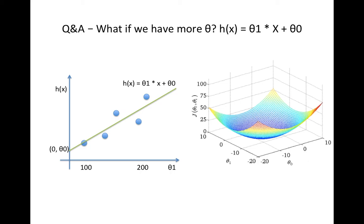Here is a bonus: what if we have more variables in our linear equation, as shown in the left chart? This is a more typical situation than our simple example. The way to find the best linear equation is exactly the same — you can use gradient descent on theta 0 and theta 1, updating them simultaneously until convergence.